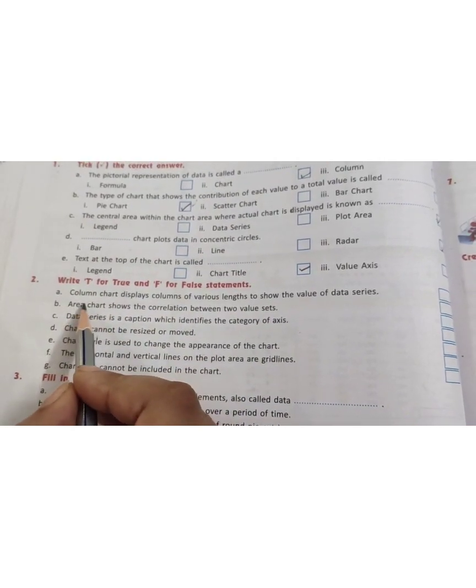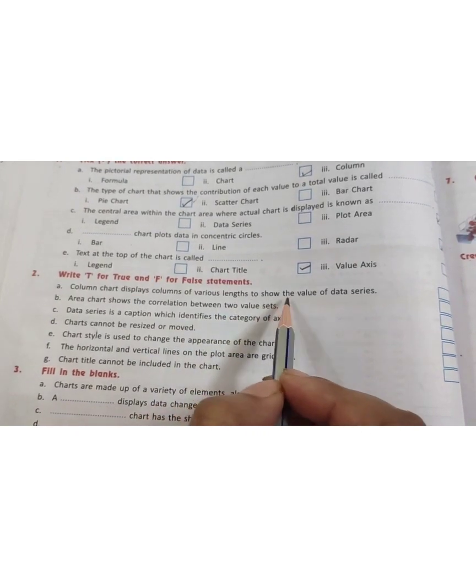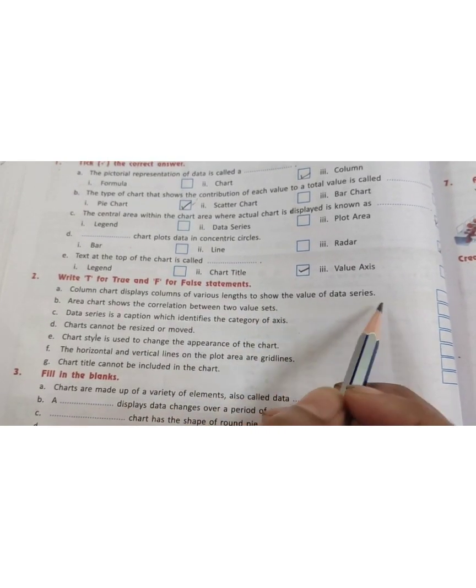First one: a column chart displays columns of various lengths to show the value of data series. This is true.